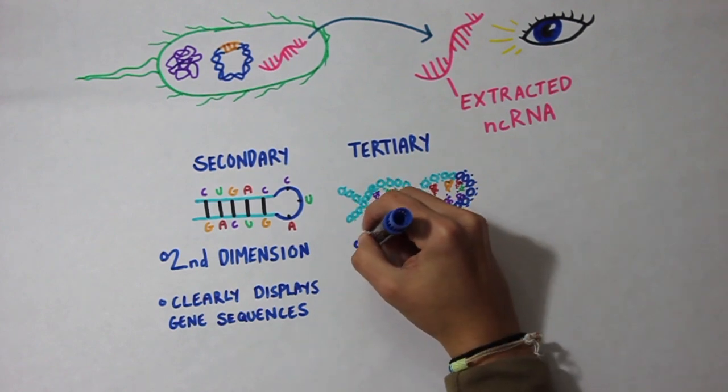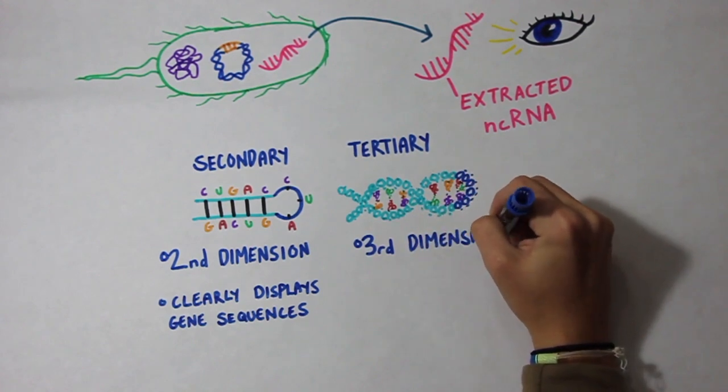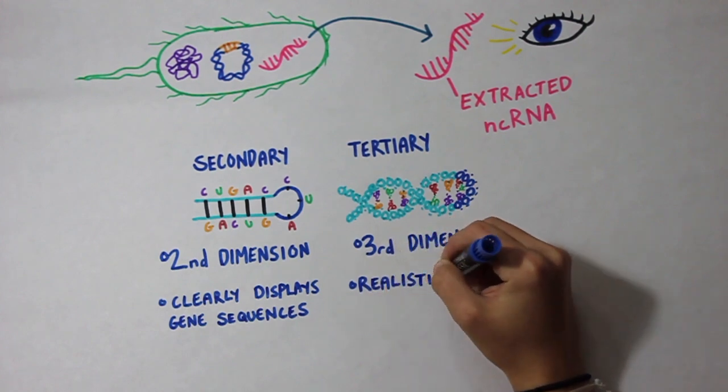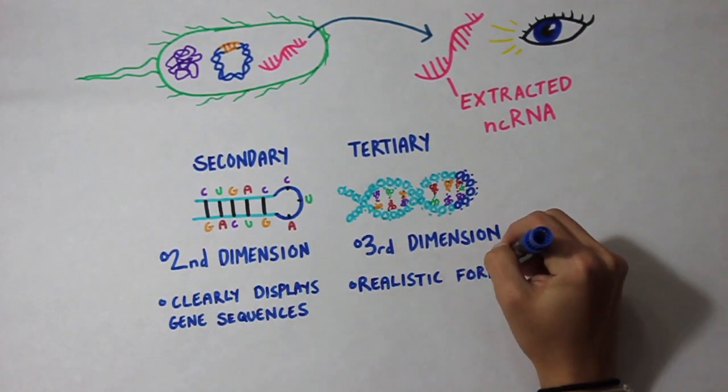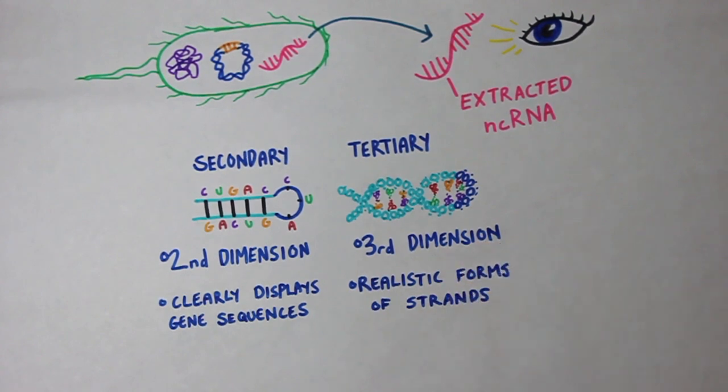A tertiary structure has a three-dimensional shape. This means it is able to accurately display the realistic twists, loops, and folds within the strands of material, which in our case is non-coding RNA.